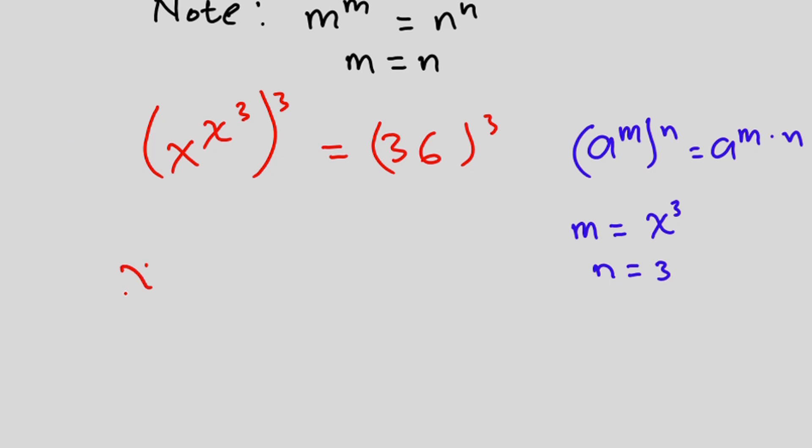So we're going to have x to the power 3 times x to the third power equals 36, which is the same as 6 to the second power, then to the third power. Now you can see that this is of the form m to the power m.